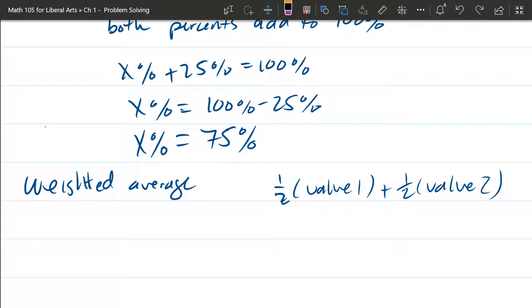So that's what's going to change in a weighted average. We have our weight percentage times our value 1, plus other weight percentage times value 2.